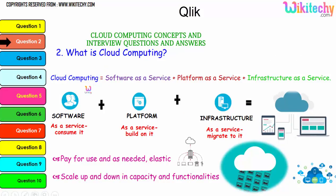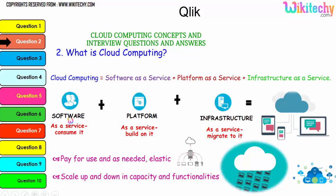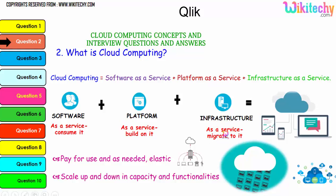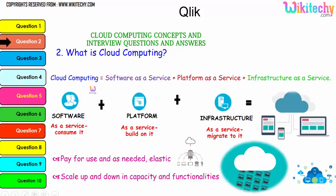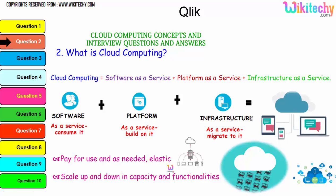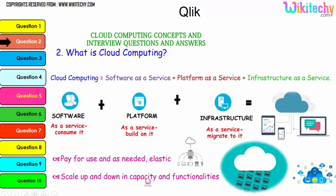Cloud computing is essentially Software as a Service, Platform as a Service, and Infrastructure as a Service. The collaboration of software, platform, and infrastructure is referred to as cloud computing. The major advantage is pay-for-use as needed and elasticity — if you need minimal storage, pay for that; if you need bigger storage, pay for that. You can scale up and down in capacity and functionality. That's the major advantage of cloud computing.